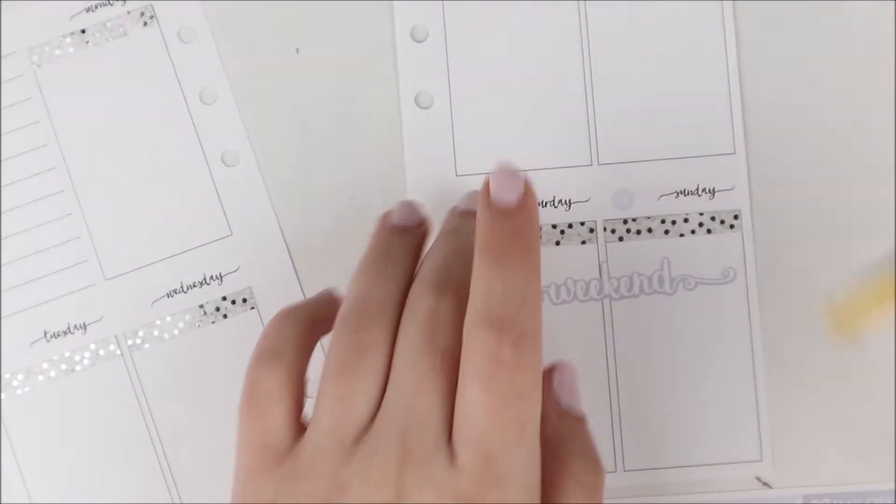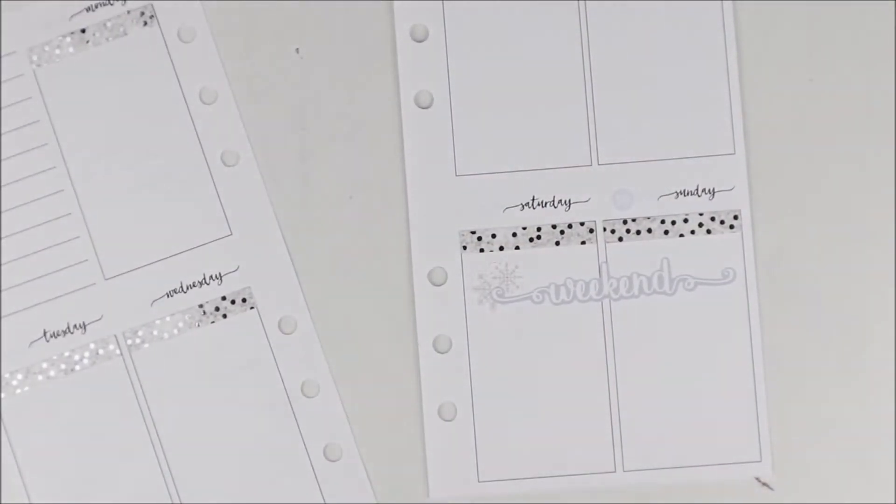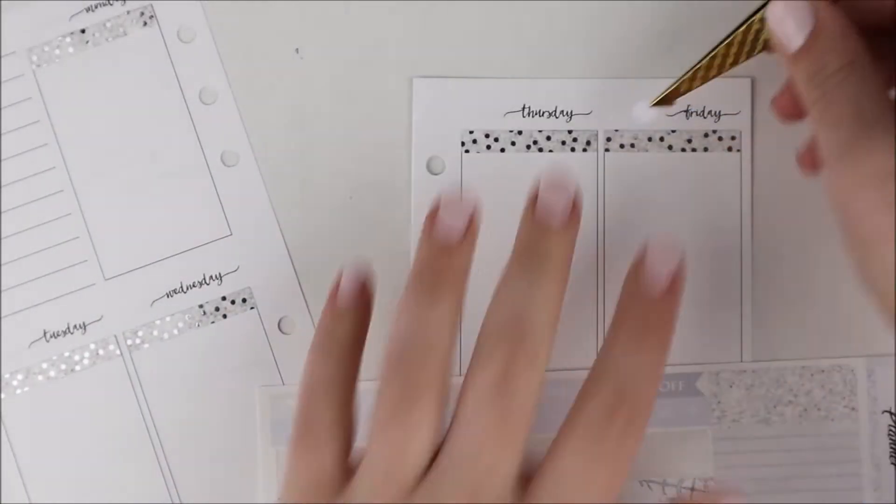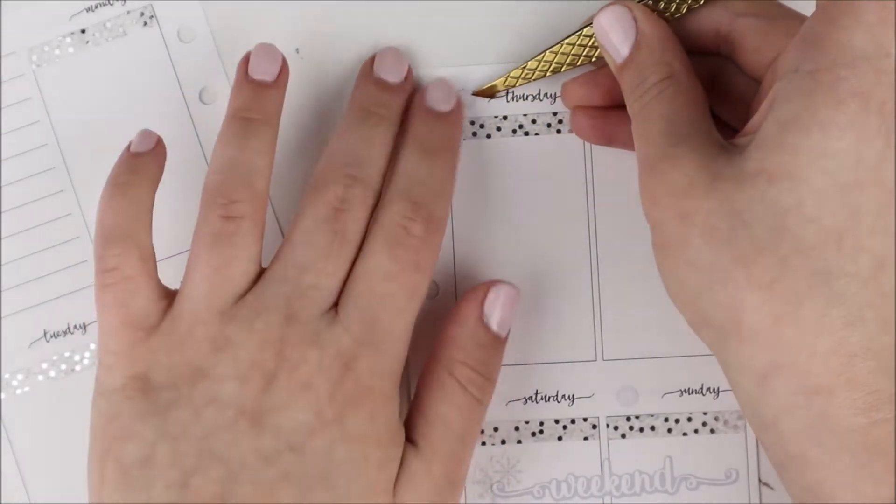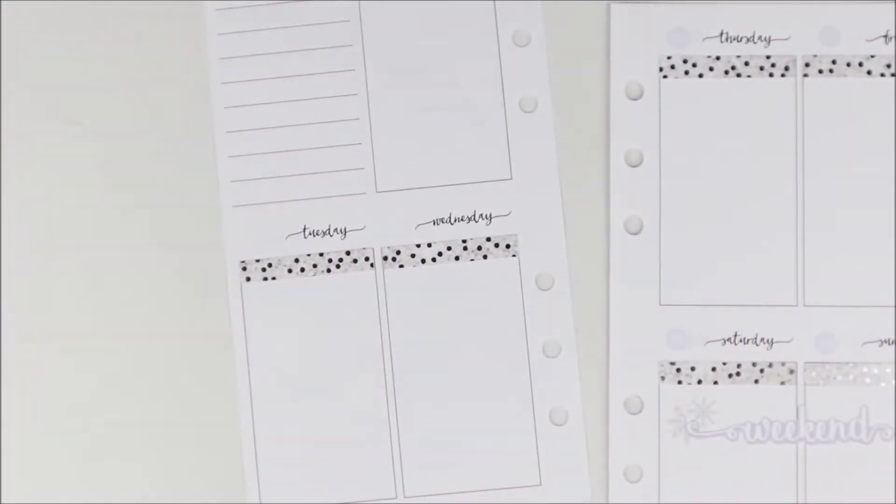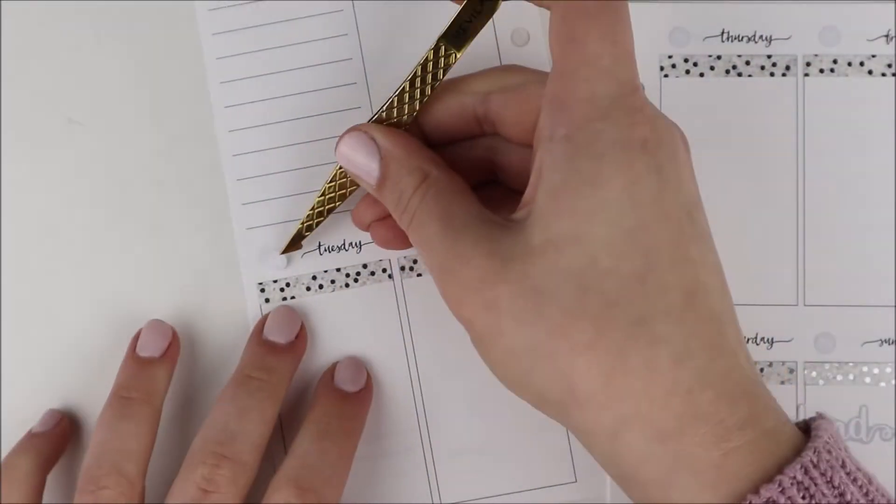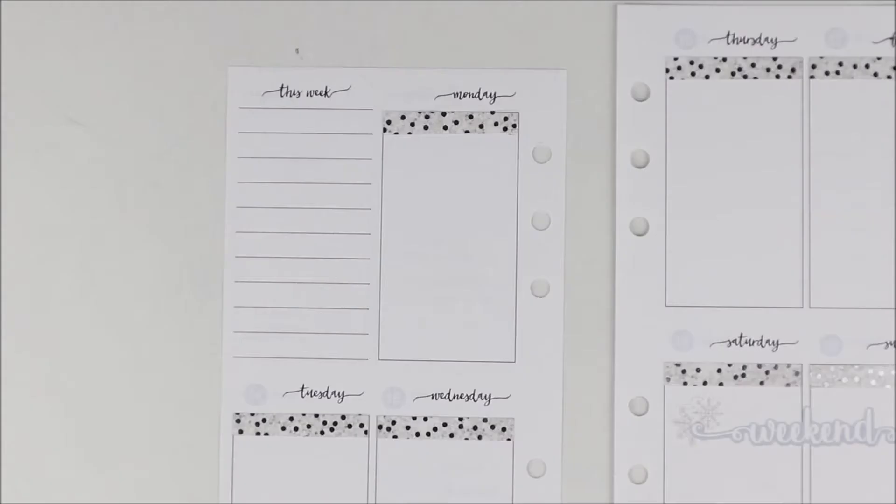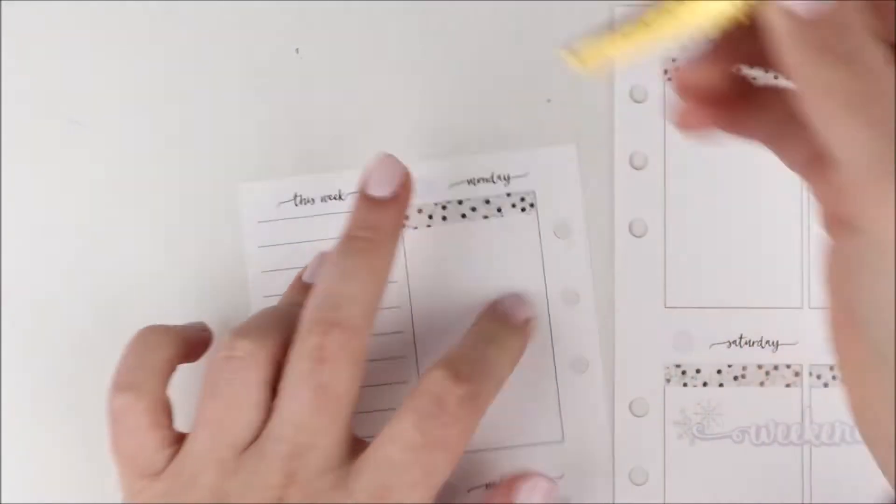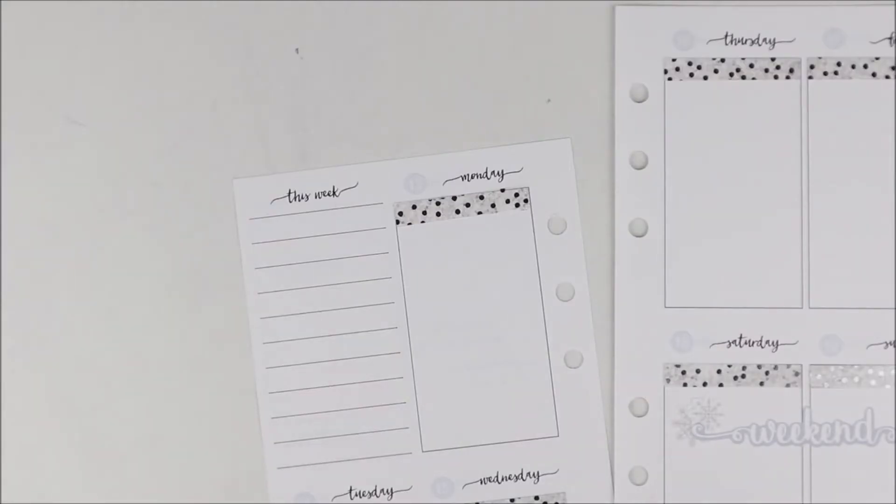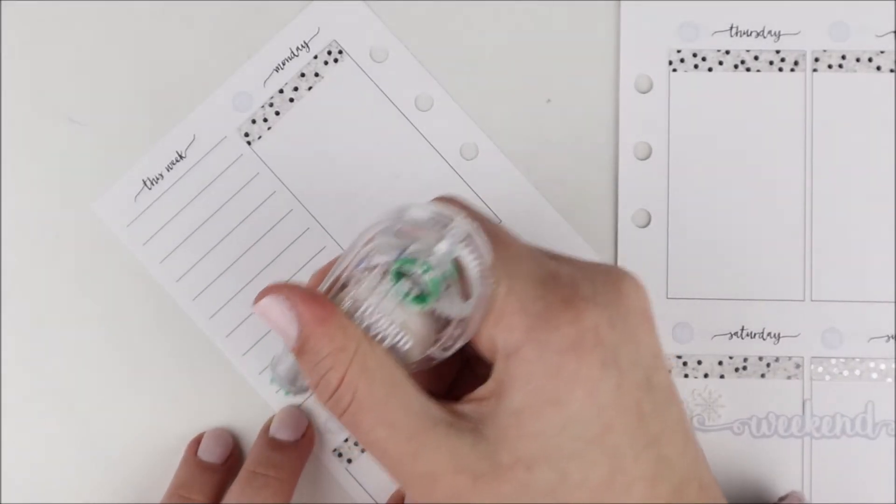I put down my weekend banner and used some deco from the kit behind it, just some snowflakes. The weekend banner itself is also from the kit. Then I'm going ahead and using the date dots that came with the kit. When I printed this my blade was running dull, so picking up some of the stickers was a little difficult. Even just these date dots were so annoying to pick up. You can't really tell because I cut out the footage of me struggling to pick them up.